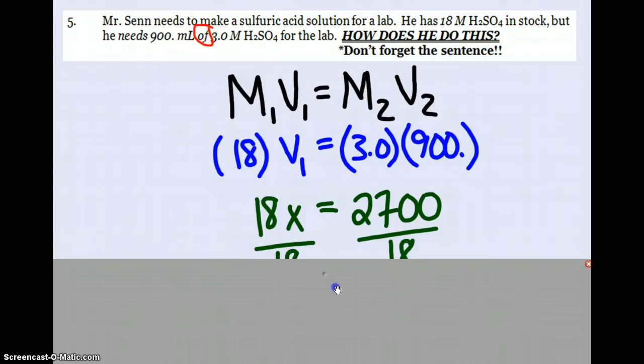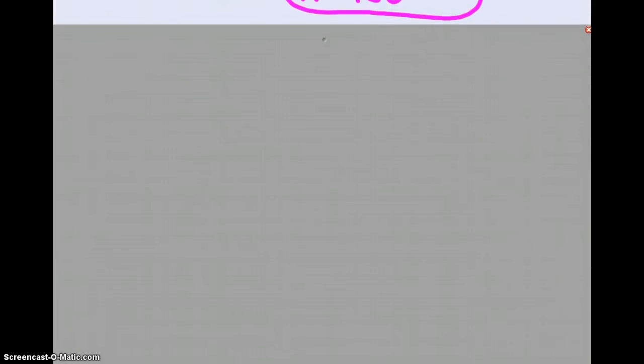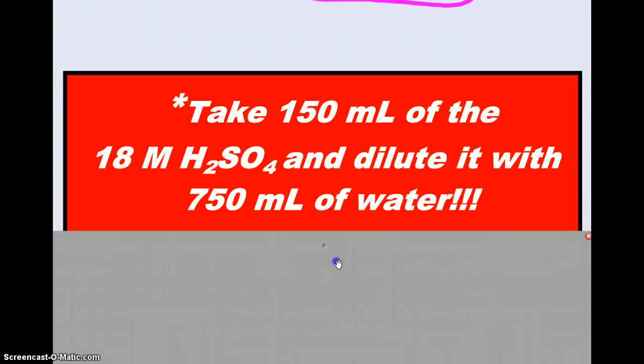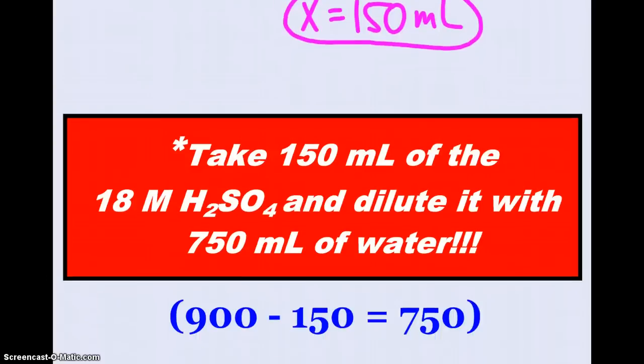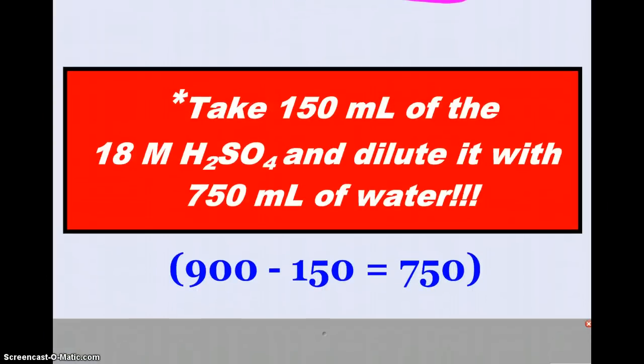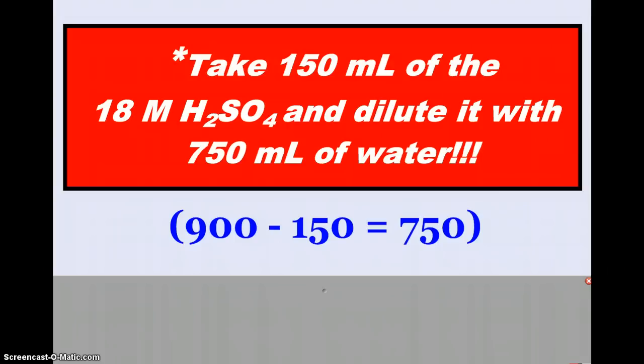Multiply, multiply, multiply, divide by 18, solve for x: 150 milliliters. That's great and fantastic, but how do you make this dilution? We need to include that lovely sentence: take 150 milliliters, which we just solved for, of the 18 molar sulfuric acid and dilute it with 750 milliliters of water. How did I get the 750? Well, the problem says I need 900 milliliters. 150 of it is the strong stuff, the rest, 750, is water.